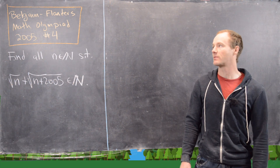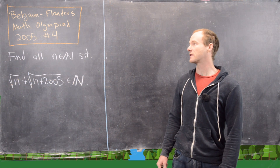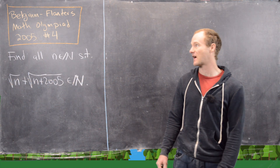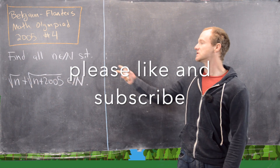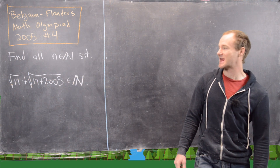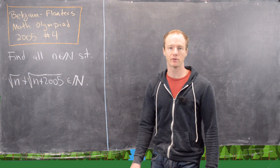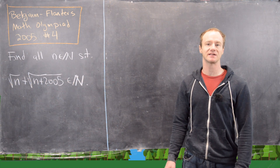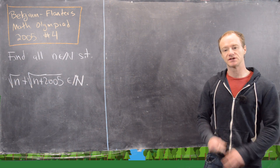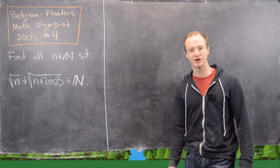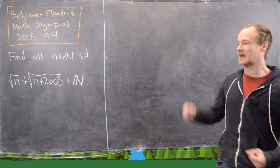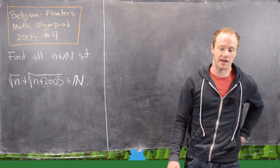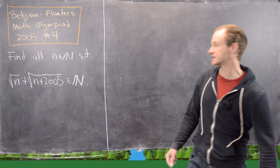In this video we're going to look at a problem from the Belgium Flanders Math Olympiad in 2005 — specifically one of the problems from the finals, number four. As we'll see in the solution, it's pretty straightforward to get an answer if you see the trick, but we need to verify we've found all n. So let's go ahead and see how to start.